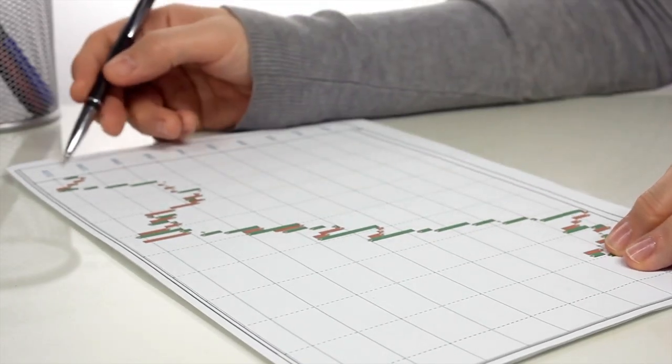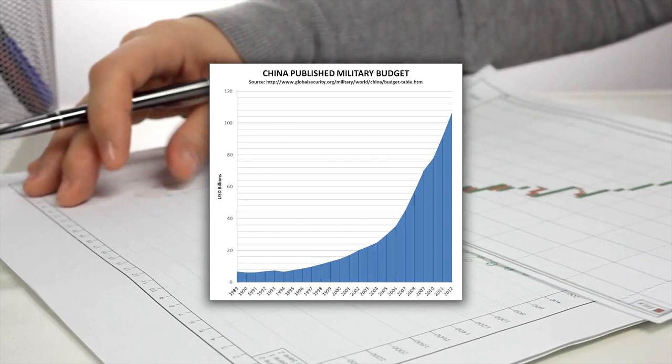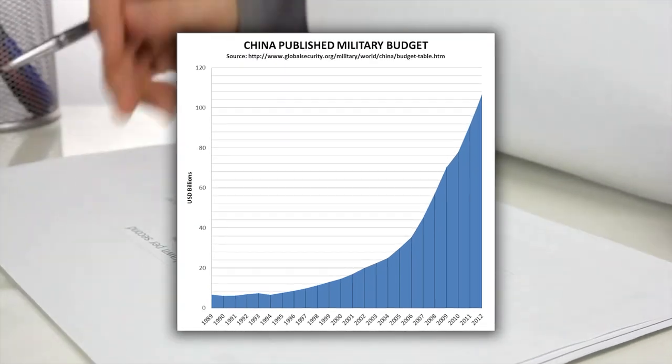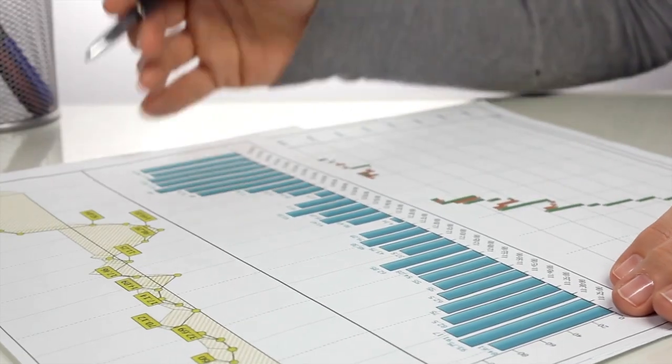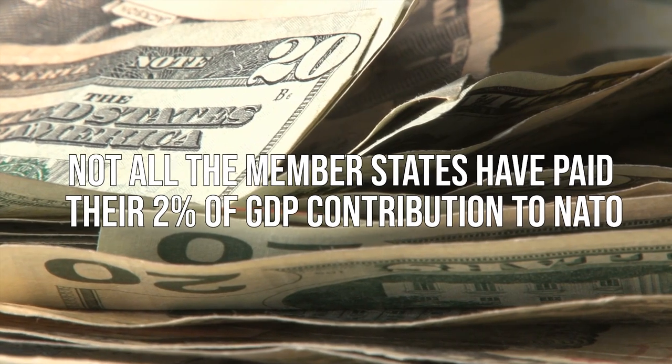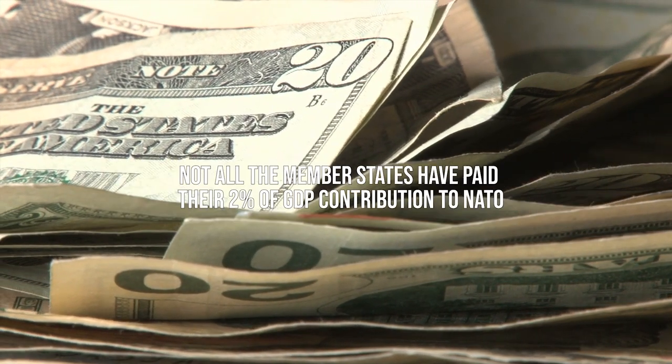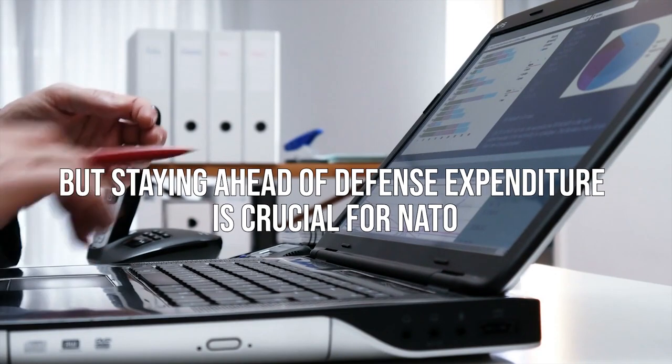However, let's re-evaluate these expenditure figures on a purchasing power parity basis and we get a very different story. If we deduct the costs of the Iraq and Afghanistan wars, the budget for defence of the United States and China are not that far apart. This is also one of the reasons why President Trump has expressed disappointment in 2016 at a NATO summit complaining that not all member states have paid their 2% of GDP contribution to NATO. You may disagree on President Trump's tone and manners with his allies, but staying ahead of defence expenditure is crucial for NATO.